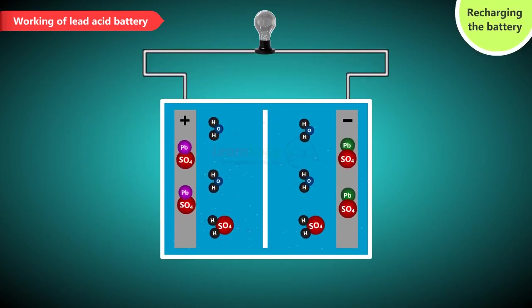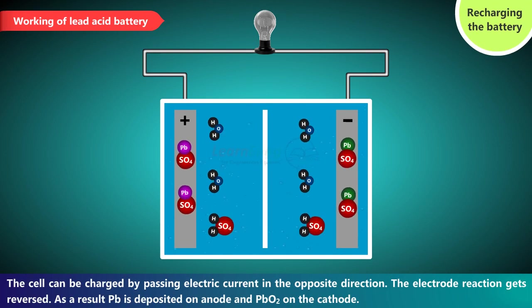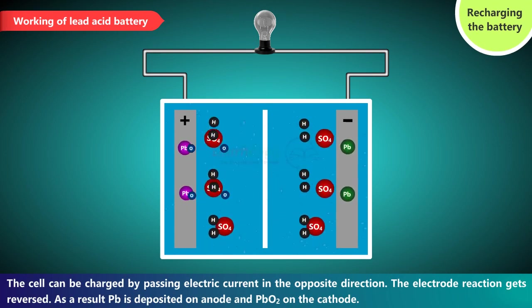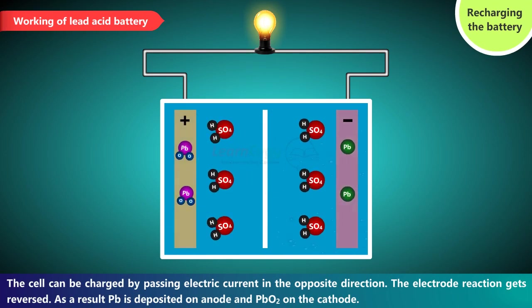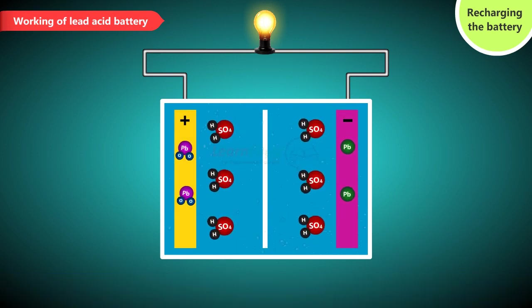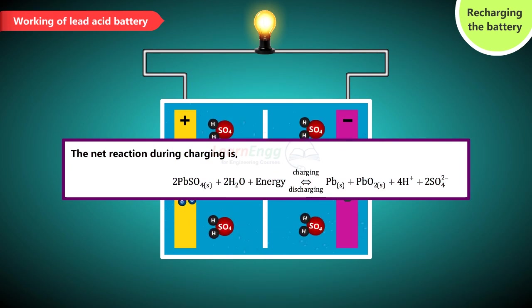Recharging the battery. The cell can be charged by passing electric current in the opposite direction. The electrode reaction gets reversed. As a result Pb is deposited on anode and PbO2 on the cathode. The net reaction during charging is.